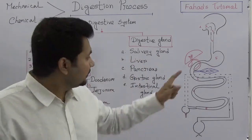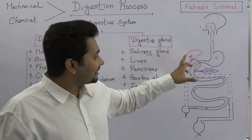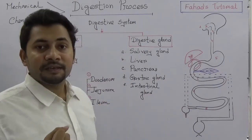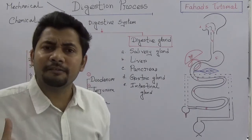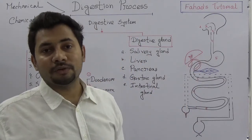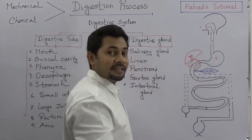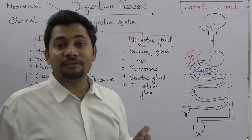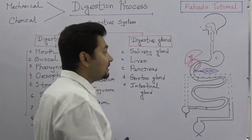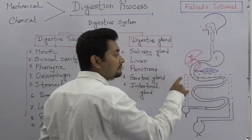The next gland is the liver — shown here with a red mark. The liver is known as a chemical laboratory because it has many functions, stores food particles, and is a storehouse. You can also see this bag-like structure — that is the gallbladder, and inside the gallbladder bile is stored. The liver produces bile, and that bile is carried out through the bile duct.